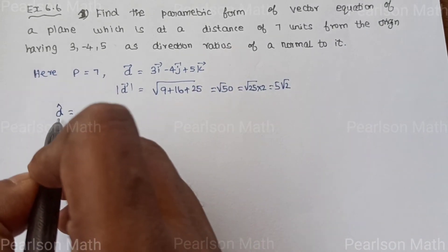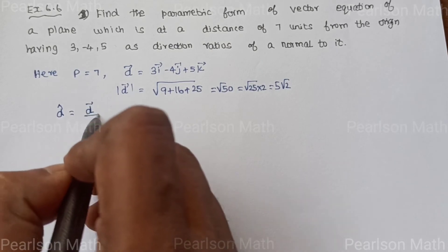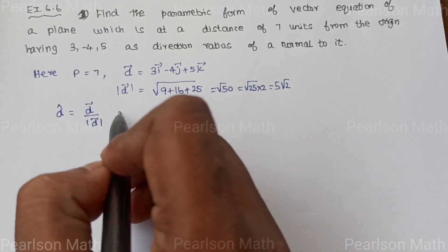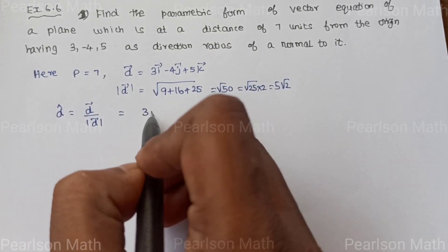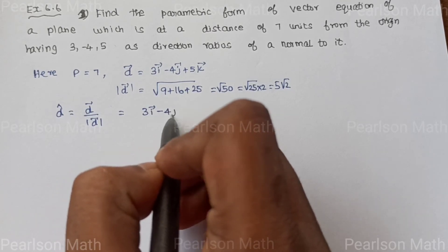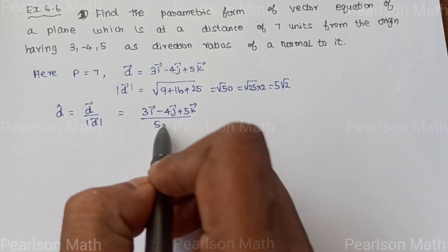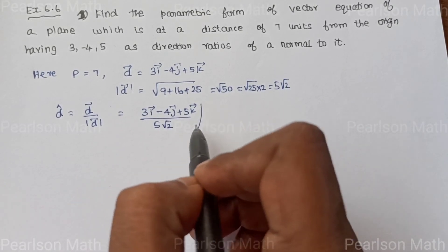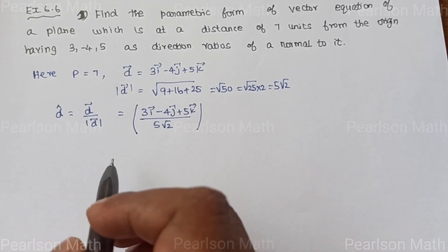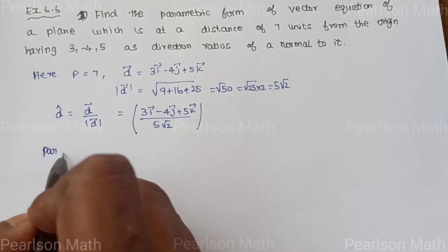So d cap formula is equal to d vector by modulus of d vector, equal to 3i vector minus 4j vector plus 5k vector by 5 root 2. The modulus of d vector value is 5 root 2.